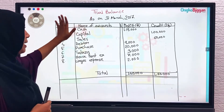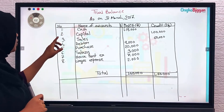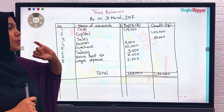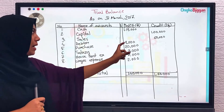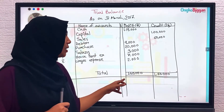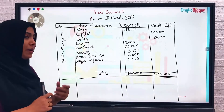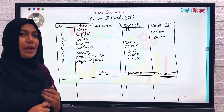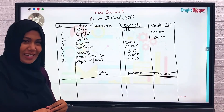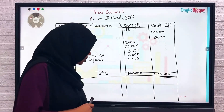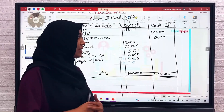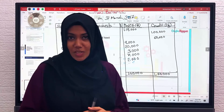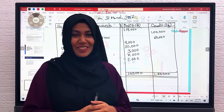This is exactly how we prepare a trial balance — first the heading, then the date, then the columns: name of accounts, LF, debit, and credit. Place each account in the right column. If both sides are equal, it is correct. If not, we write a suspense account for the difference to make them equal. This concludes Chapter 9, and next we will start Chapter 10 — the final financial statement.